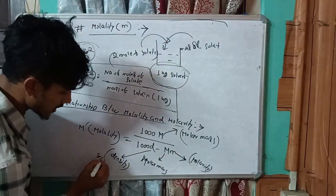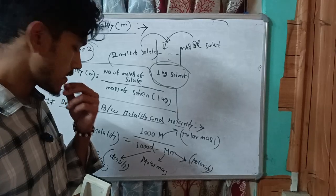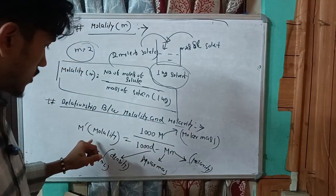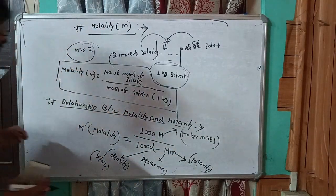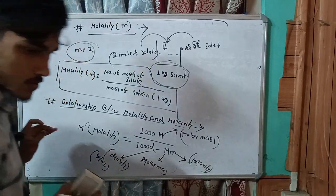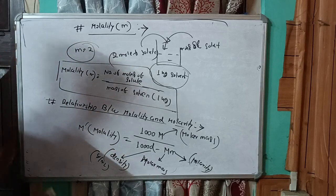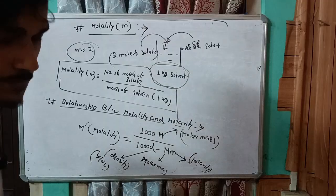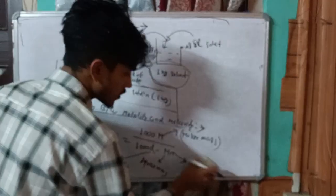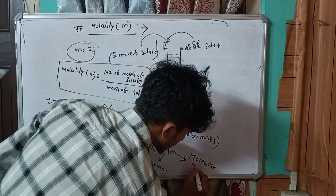To summarize the relationship: molarity M = 1000·m / (1000·d − m·M), where d is the density in g/mL and M is the molar mass. We can use this formula to convert between molarity and molality.